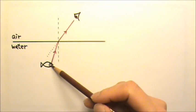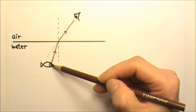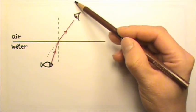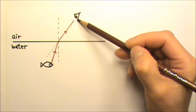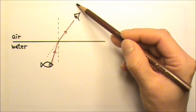This means when the fish looks at you, the fish would think you are up there instead of here. The fish would think you are taller than you really are.